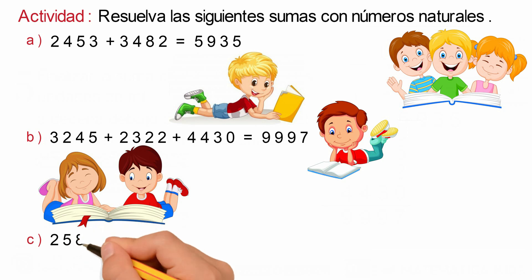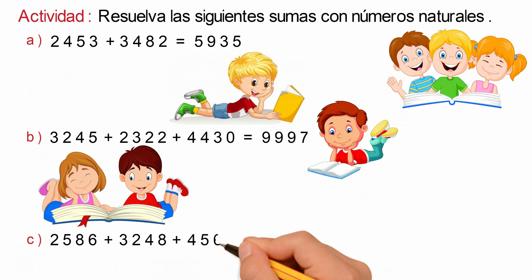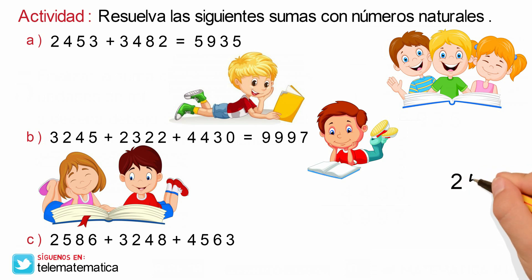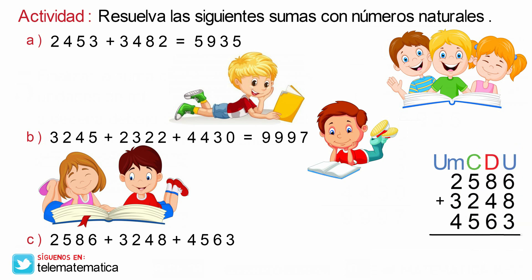Literal C: 2.586 más 3.248 más 4.563. Comenzaremos escribiendo los números verticalmente. Antes de comenzar a sumar, identificamos la columna de las unidades, la columna de las decenas, la columna de las centenas y la columna de las unidades de mil. Comenzamos sumando los elementos de la columna de las unidades: 6 más 8 es igual a 14, y 14 más 3 es igual a 17. Escribimos el 7 y llevo 1, que lo escribimos encima de la columna de las decenas.